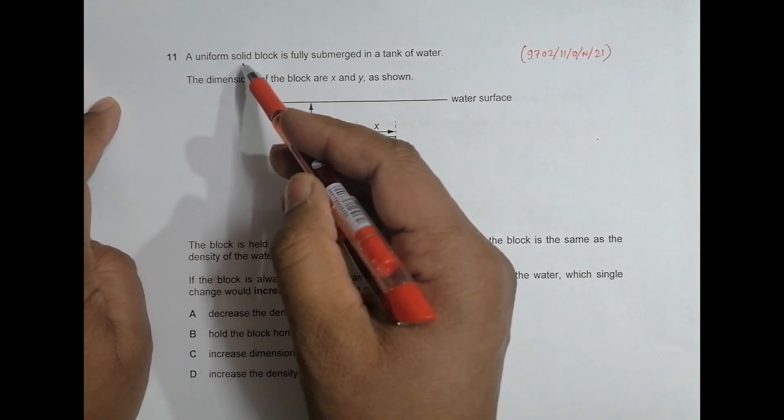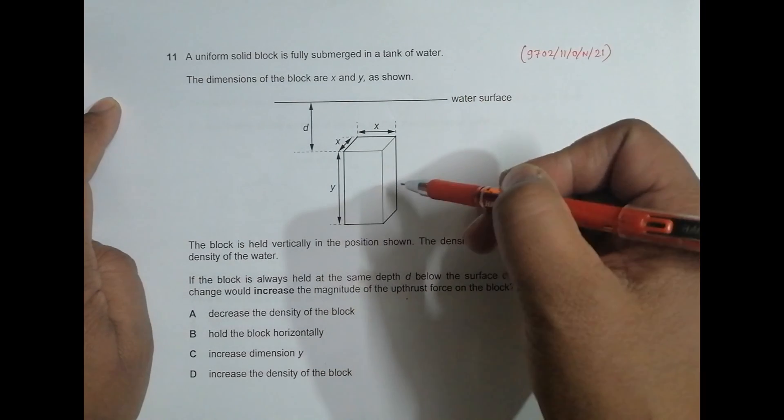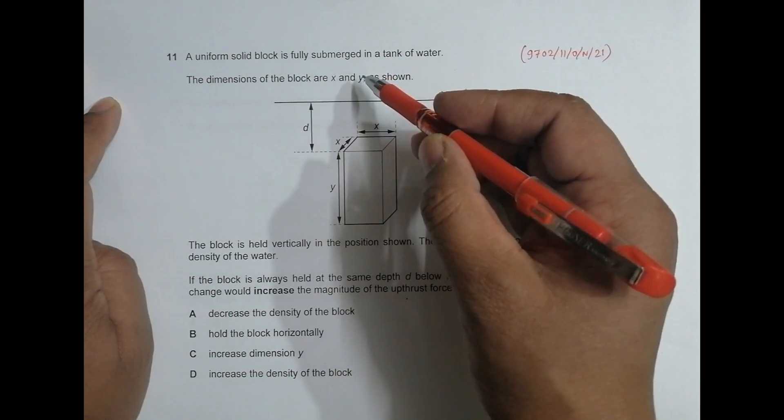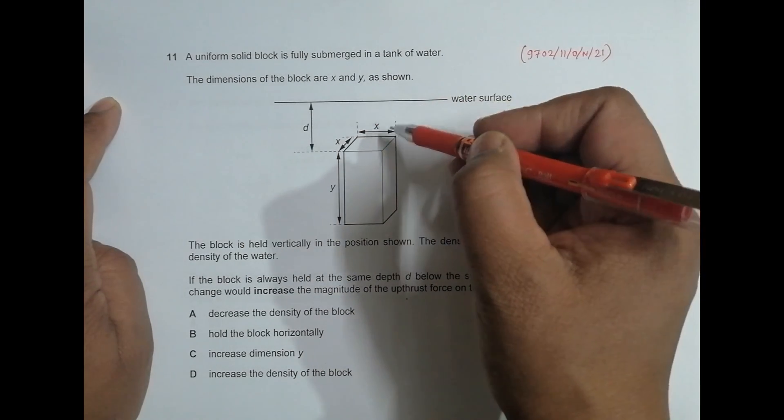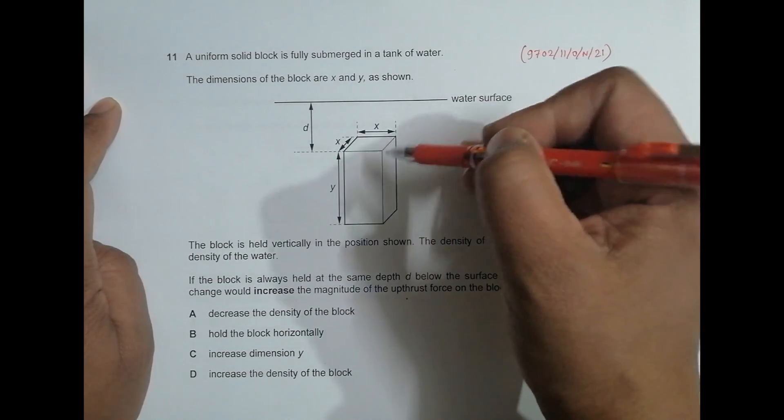It says a uniform solid block is fully submerged in a tank of water. Natural means that it submerges by itself, artificial means that we apply some force from outside to submerge it.